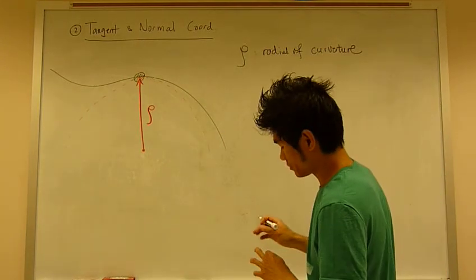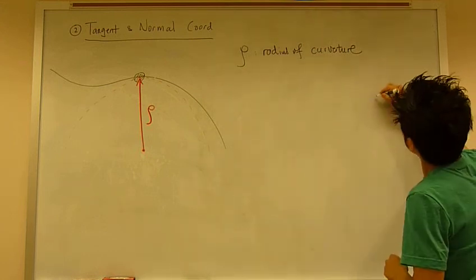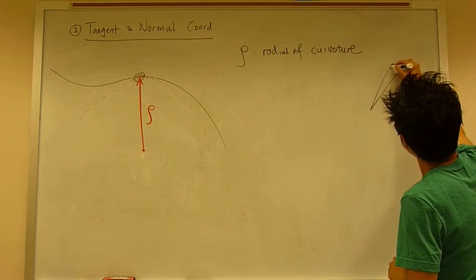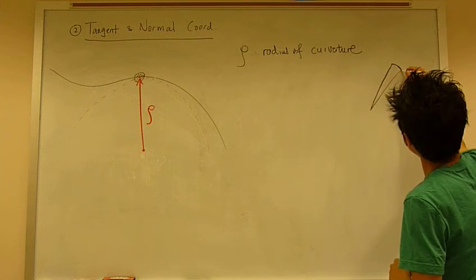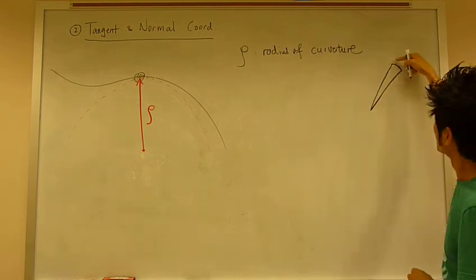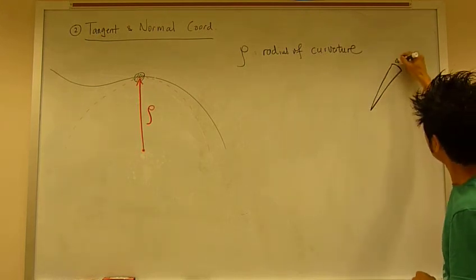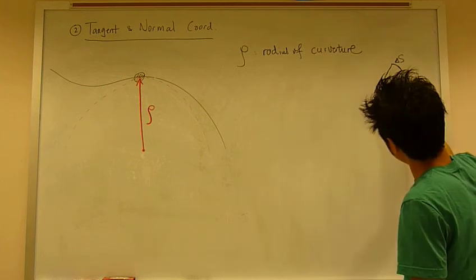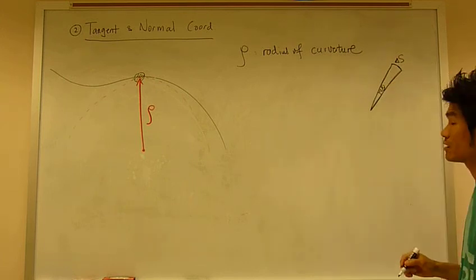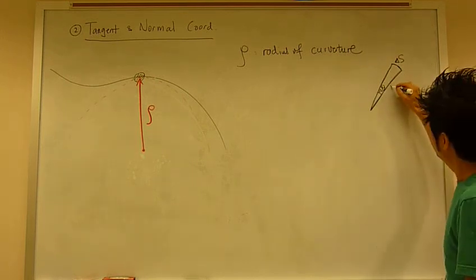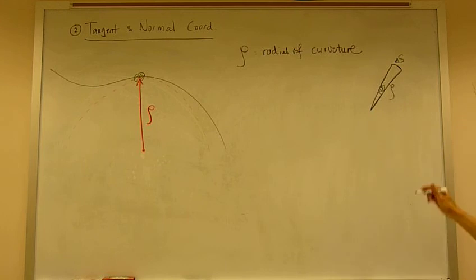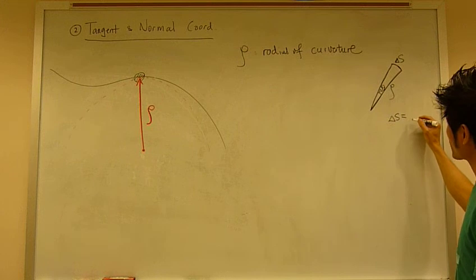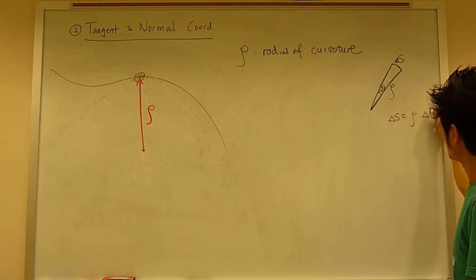And radius of curvature for any curved path, you can look at it by taking one slide. So along this path, this little curve right here is called delta S, the change in distance. This change of angle is called delta theta, and this is the radius called rho. And delta S as arc length equals rho times delta theta.